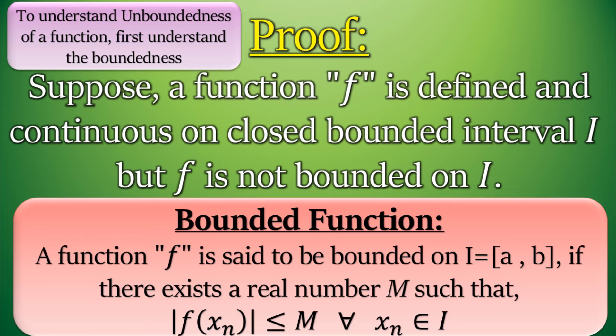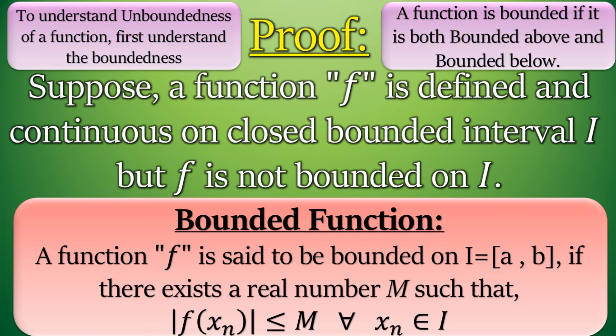One thing I want to tell you here is a function is bounded if it is both bounded above and bounded below, and the bounded function I described here is basically bounded above because we just need to negate the boundedness of function. So if we negate that a function is not bounded above, it is enough for it to be called an unbounded function.